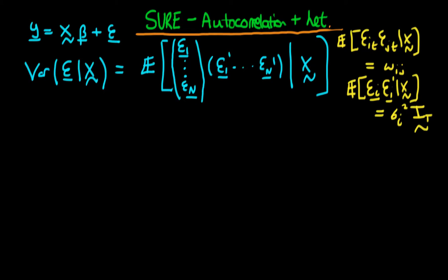In this video I want to explain why, even if we assume that for each individual in our system the Gauss-Markov conditions of no autocorrelation and no heteroscedasticity hold, even in those circumstances, when we consider the system as a whole there is a variance-covariance matrix which isn't diagonal. In other words, there is autocorrelation and there is heteroscedasticity.